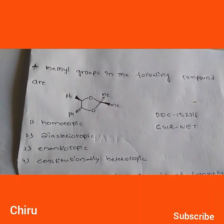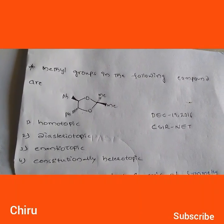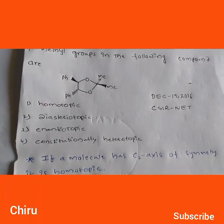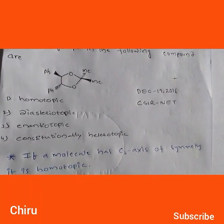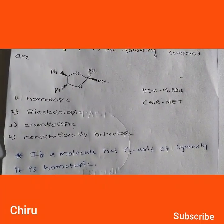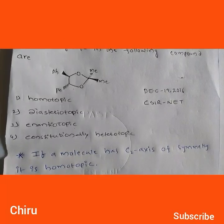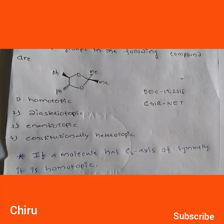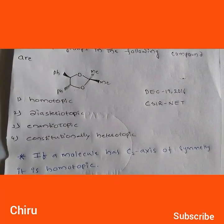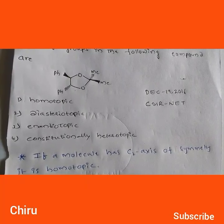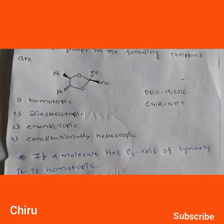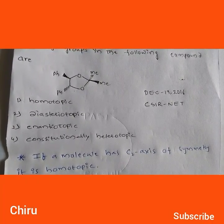Which is called homotopic? If a molecule has a C2 axis of symmetry, it is simply homotopic. What is diastereotopic? If the molecule doesn't have any symmetry elements or any symmetries, it is simply diastereotopic.